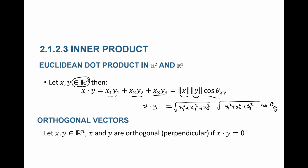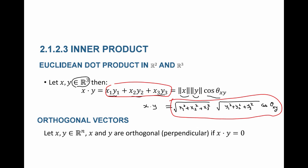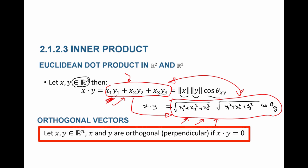Starting from either definition, you should be able to derive one from the other. This is how we define the dot product, and in other texts you'll find the equivalent angle-based definition — you should look for a proof showing they are equivalent. Finally, we say that two vectors are perpendicular or orthogonal if x·y equals zero.